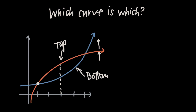Our intersection points are here and here, which means the area we're looking for is between about x equals 1 and x equals 5. On this interval the red curve is clearly the top curve and the blue curve is clearly the bottom curve. So if you've got a picture it'll be really easy to identify which one's the top and which one's the bottom.